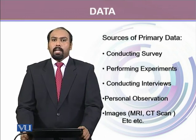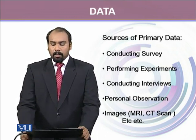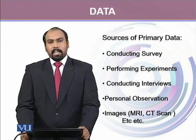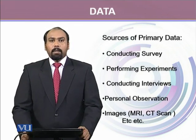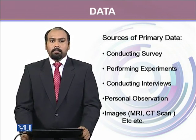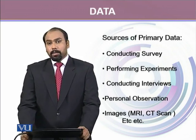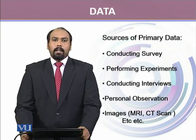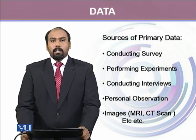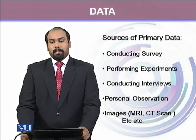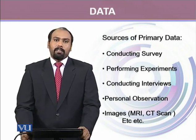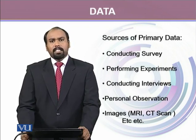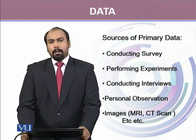Primary data can be obtained from multiple different sources. We can conduct surveys to obtain first-hand information, perform experiments, conduct interviews, or make personal observations. Nowadays it's very common that data is in the form of images, like the results coming out of MRI or CT scans. There are many other ways we can collect primary data.